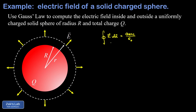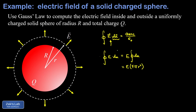The electric flux integral simplifies in two important ways. First, since E is parallel to the normal vector at every point, the dot product becomes trivial and we get the integral of E times dA. Second, because E has constant magnitude over the entire Gaussian surface, it can be factored out of the integral. The integral of dA is just the total surface area, giving us E times 4πr².